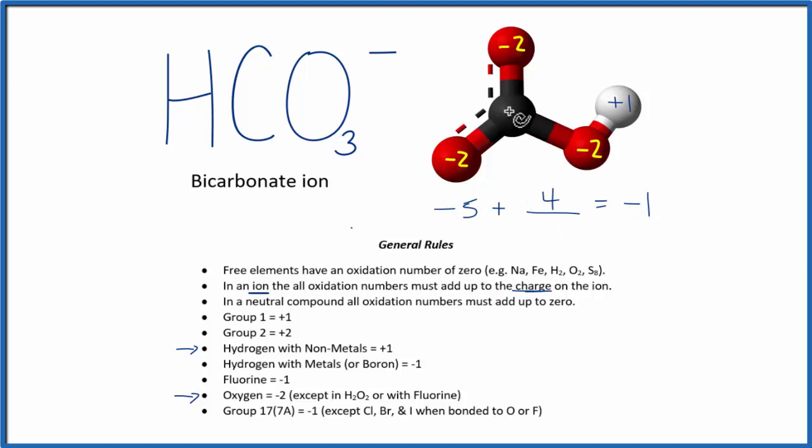So the oxidation number on the carbon has to be this 4 here, plus 4. And those are the oxidation numbers for HCO3 minus.